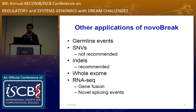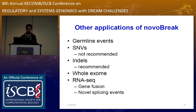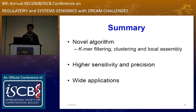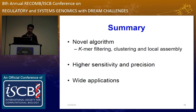NoBreak can be applied to other types of applications. For example, when given without a tumor or control, it can discover germline events. It can also be used to discover SNVs and indels, and it can be applied to whole exome data. It can also be used with RNA-seq data for detecting gene fusions and novel splicing events. In summary, we developed a novel algorithm, NoBreak, to participate in the DREAM structural variation challenge. The novelty of NoBreak lies in its k-mer filtering, clustering, and local assembly algorithm. It has higher sensitivity and precision than current methods, and its applications are wide.